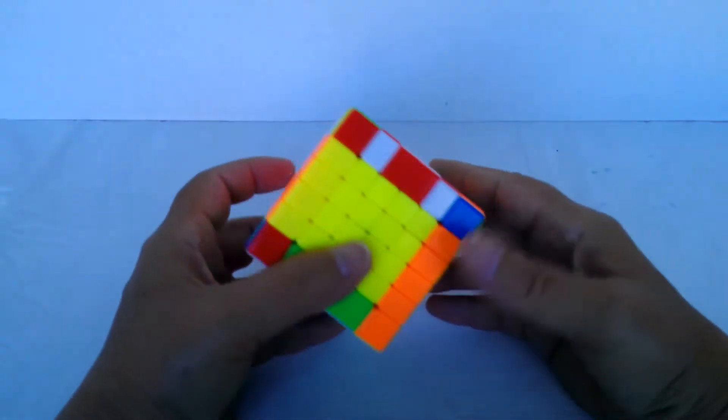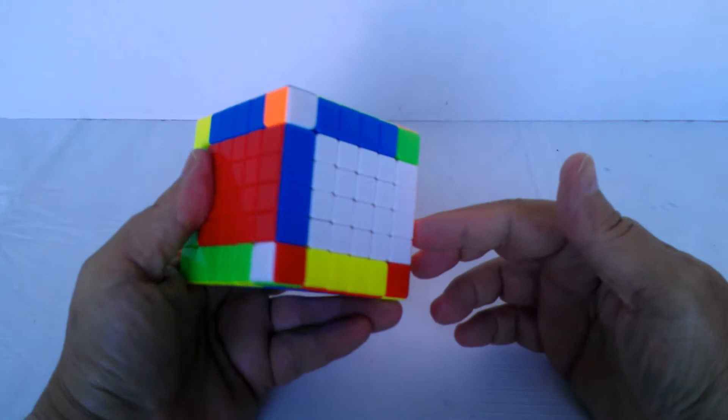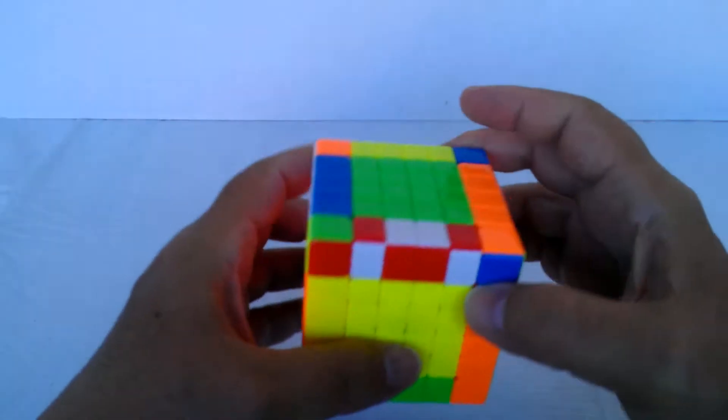This is similar on the 6x6 to the 5x5, where basically you have all your centers solved, you have all your edges solved, except for this one.